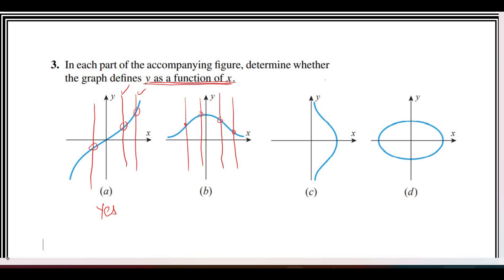Now in this third one, if I draw a vertical line, you can see that it touches or intersects the graph at two points. A single vertical line touches the graph twice. So we say that this does not define y as a function of x, meaning this is not the graph of a function.